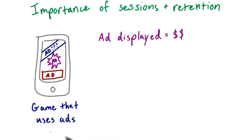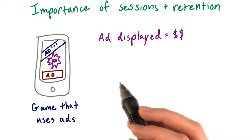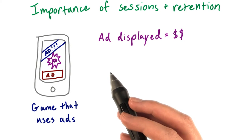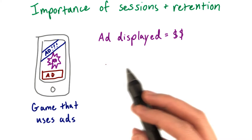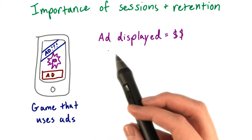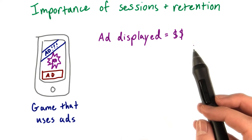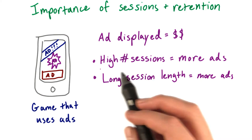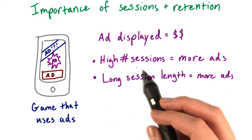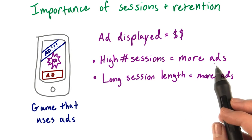First, let's consider a straightforward example of a game that uses ads to make money. Ads might not make the most money, which we'll get into later. But their success does depend on how often and how long users play your game. Because each time an ad is displayed in the game, it makes a small amount of money for the developer. And when there are a lot of sessions, so the session count is high, there will be a lot of opportunities to display an ad.